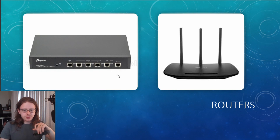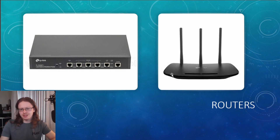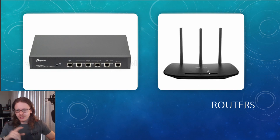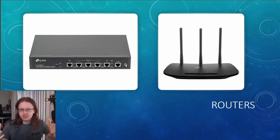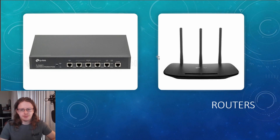Routers can look quite different. The one on the left here is more what you'd see in a business setting — it has no wireless capability, it is just a router. The one on the right is more like what you'd see in your home — an all-in-one with the router, Wi-Fi, and everything. All these do is allow communication out to a WAN, or in most cases straight out to the internet. It also allows traffic between VLANs or separate LANs, which I'll cover when we get to switches.